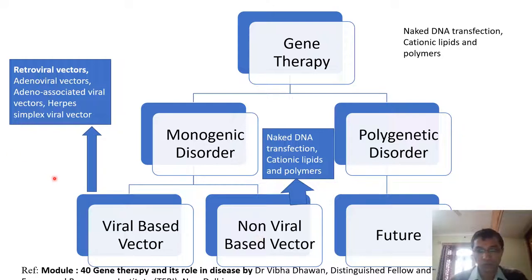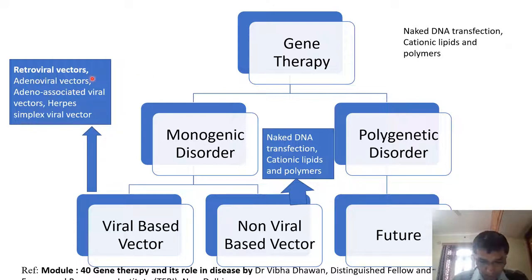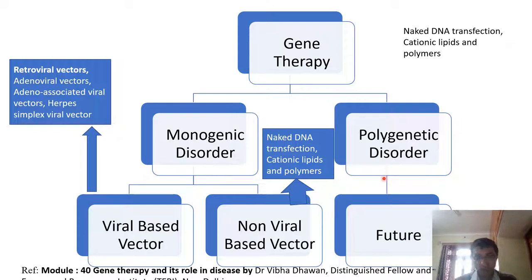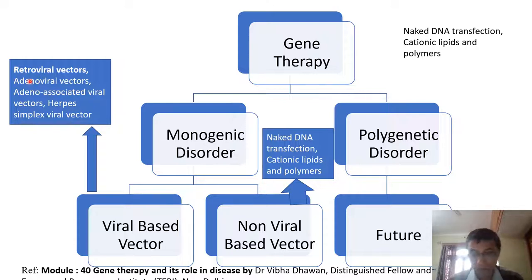This is today's content. We will start with the adenoviral vectors. These adenoviruses basically elicit respiratory tract infections — they cause respiratory infections in humans. They can infect both dividing as well as non-dividing cells. These viruses are double-stranded DNA viruses.